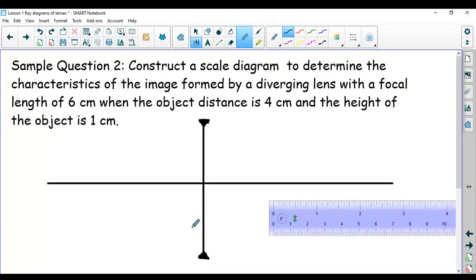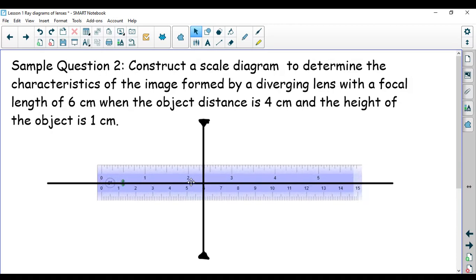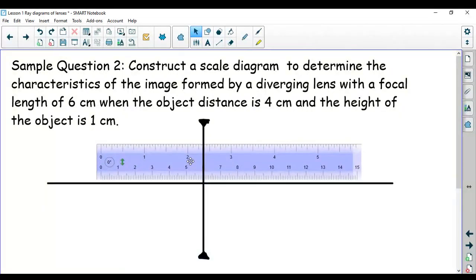Then I just need to put on all of my stuff for my diagram. It says that the focal length is six centimeters. So I'm going to line up my ruler and I can draw on my two focal points. I can put a focal point on one side and then the focal point on the other side. Excellent. So those are my focal points.